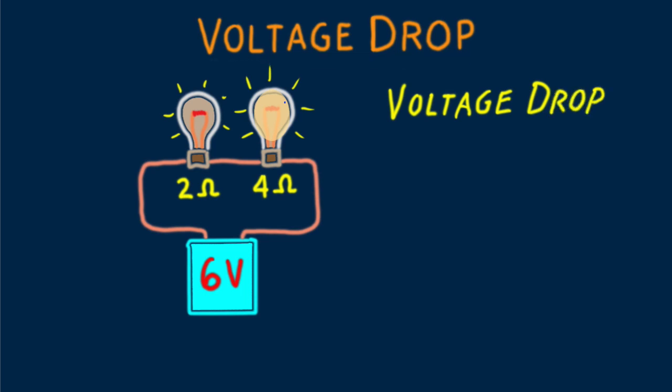The 6 volts provided by the battery is across two bulbs, and with their combined resistance of 6 ohms, Ohm's Law tells us that the current in this circuit is 1 amp. And that 1 amp flows through each bulb. So how much voltage is impressed across each bulb?